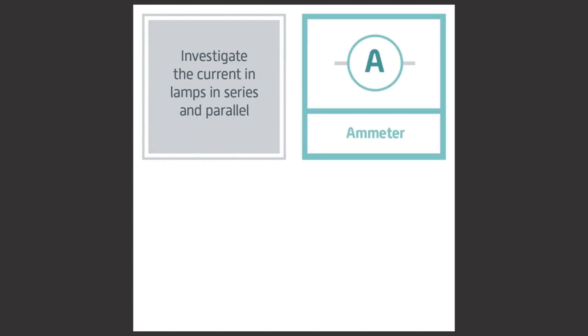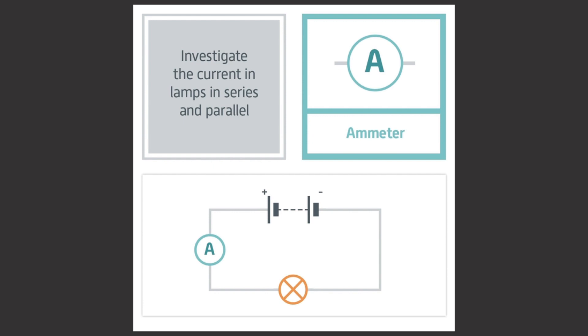Firstly, we'll investigate the current in lamps placed in series and in parallel. To measure current through a lamp, we use an ammeter. The ammeter must be placed in series with the lamp and within the same loop as the lamp. The ammeter can be placed before or after the lamp. Now we have the ammeter set up, let's look at current in a series circuit.